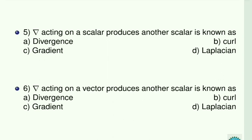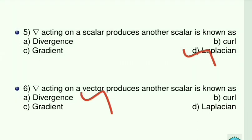Next: del acting on a scalar produces another scalar. We have two operations here. Del acting on a scalar that results in a vector means that is a gradient. Del acting on a scalar which results in another scalar is the Laplacian. And del acting on a vector that produces another scalar is nothing but divergence.